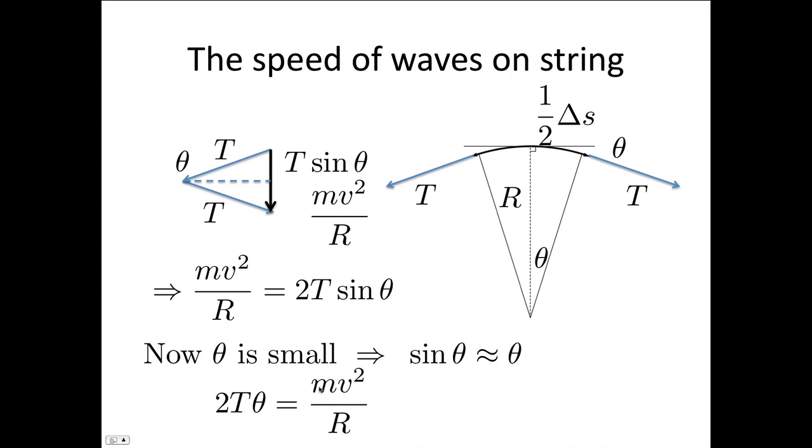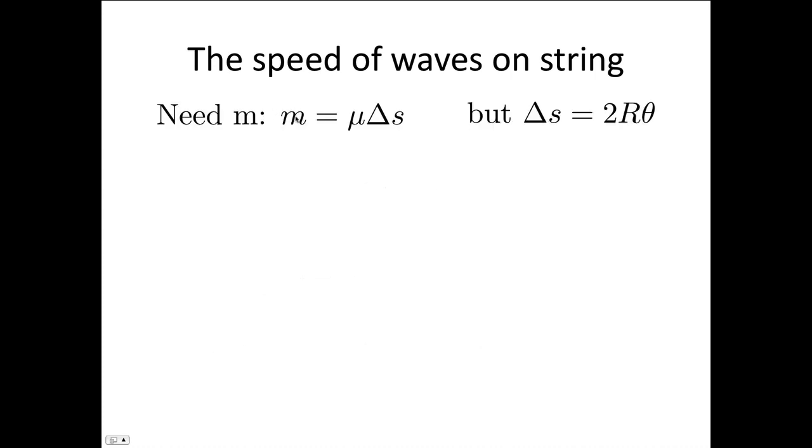Now what we need to do is work out this mass. The mass of a piece of string equals the density per unit length of the string times the length of the string. But we've already shown that the length delta s equals 2r theta. So we can say that the mass of the piece of string is the linear density mu times 2r theta.